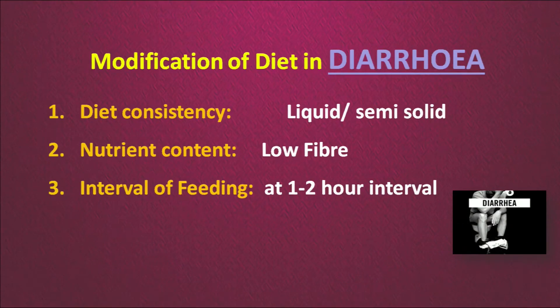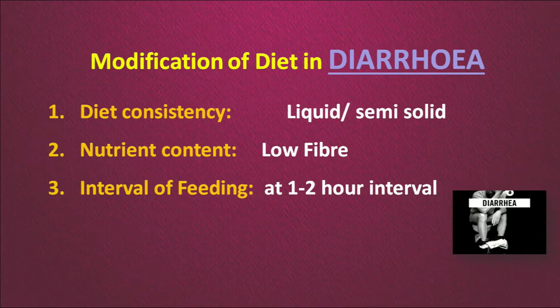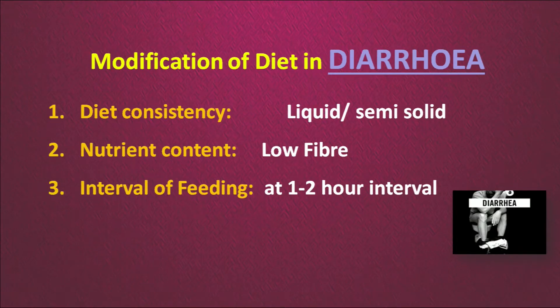Now we will talk about the modification of the diet in case of diarrhea. We consider three things: change in diet consistency, change in nutrient composition, and interval of feeding. Initially, a liquid diet needs to be given during diarrhea, and with the passage of recovery we can move to a semi-solid diet. We need to give a very low fiber or no fiber diet, with lots of liquid including ORS. Initially, liquid diet should be given at 1 to 2 hour intervals, which helps to recover the loss of fluids from the body.